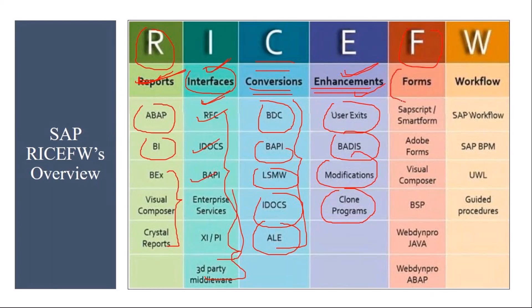F means Forms, which are printouts. In industries, various requirements arise to take printouts. For example, in PM (Plant Maintenance), after creating a maintenance order, a technician needs to take spare parts from the engineering warehouse. He takes a printout containing the spare parts details and goes to the warehouse to request them. When we go to the forms session, I will show how to create a functional specification document for developing custom forms.